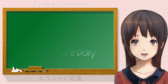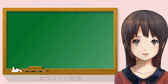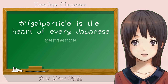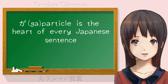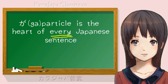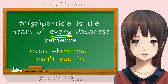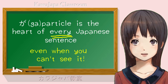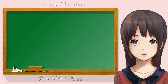Now, I have not forgotten our subject. We were talking about how the ga particle is the center, the fulcrum, the vital point of every Japanese sentence, even when there appears to be no ga in the sentence. In order to explain that rather mysterious sounding fact, I have to introduce you to this invisible character.